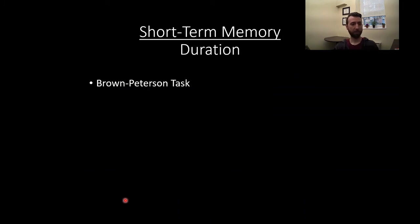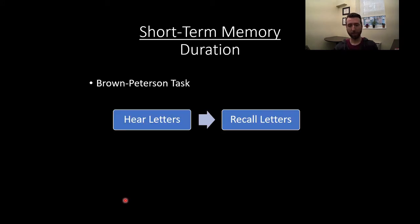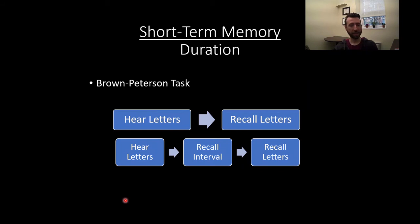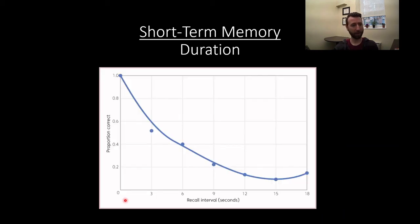So short term memory is what it says. It's short term. So how long does it last? The Brown-Peterson task, participants were put in one of two conditions where they either hear letters and are immediately asked to recall those letters or hear the letters, have to sit around for a recall interval where they're not really doing much, and then are asked to recall the letters after. You can see in the first group that these people perform well, but after a recall interval, a period of time passing between hearing the letters and recalling them, they perform poorly. Our short term memory fades with time, but how quickly does it fade?